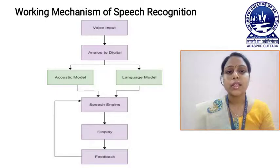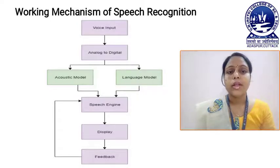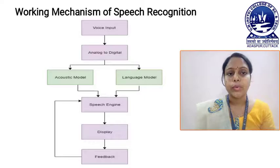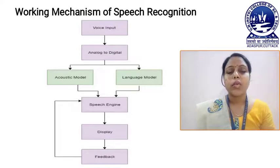The language model detects the language of our speech given as input. After detecting the sound and the language, the input goes through the speech engine. The speech engine takes the sound and language and forms sentences or words, then displays the output. If there is any feedback, it goes back to the speech engine, which then performs corrections according to that feedback. This is the working mechanism of the speech recognition process.